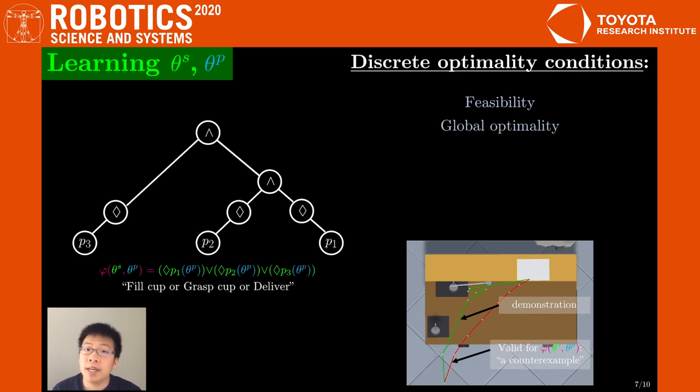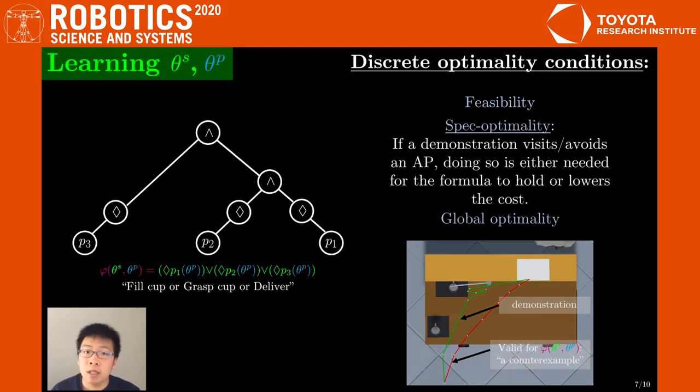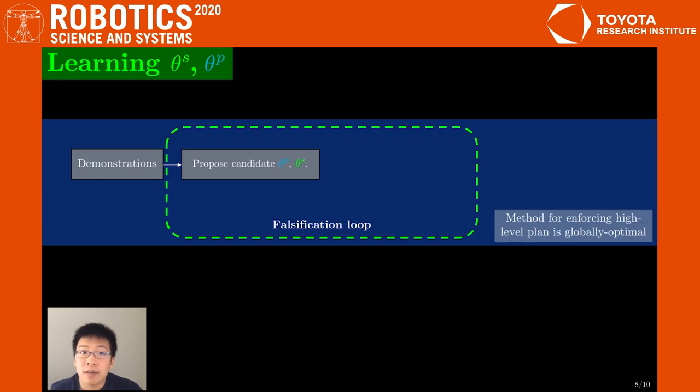Instead, we should try to enforce global optimality in the discrete component, that is, the demonstrator makes the best high-level plan. This is challenging to enforce directly, so as a surrogate, we will use the notion of spec optimality, which roughly enforces that trajectories do not needlessly visit or avoid APs. This invalidates many weaker formulas.